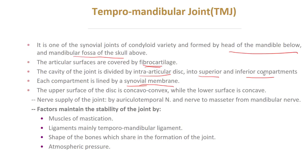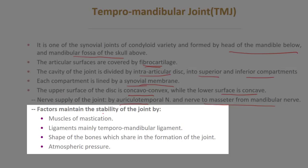The upper surface of the disc is concave-convex, while the lower surface is concave only. The nerve supply of the joint is by the auriculotemporal nerve and the nerve to masseter, all these nerves from the mandibular nerve.